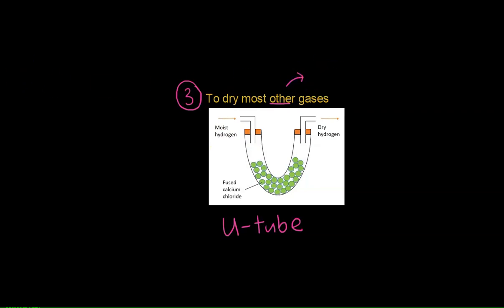These are usually referred to gases that are neither acidic nor alkaline. They are neutral gases. So if those gases are moist, we can remove their moisture using this method, which is a U-tube.